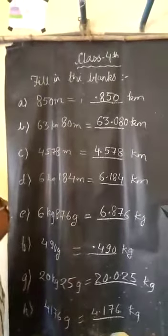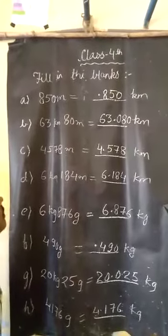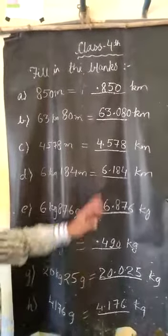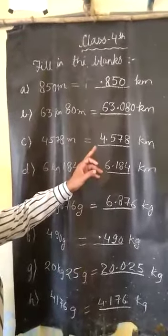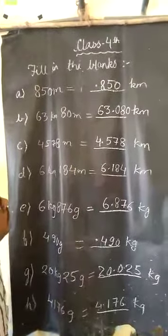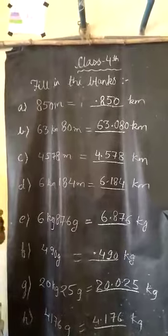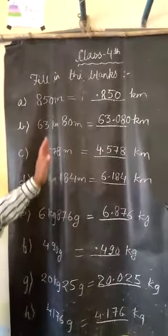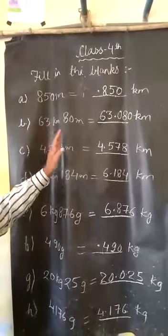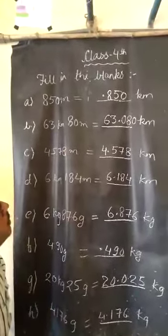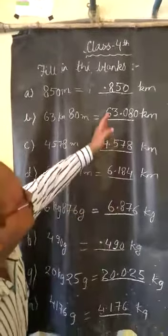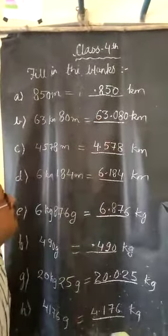Then we divide it by 1000. We obtain 0.080, because we put the decimal after 3 digits. So, it will be 0.080. Then we add 63 and 0.080 kilometers. After adding, we get 63.080 kilometers.